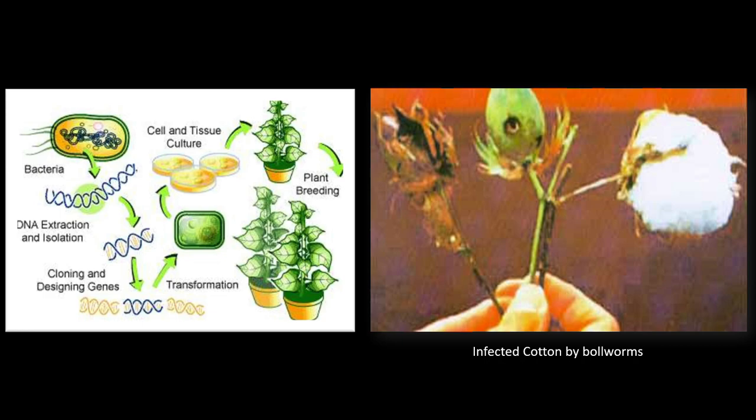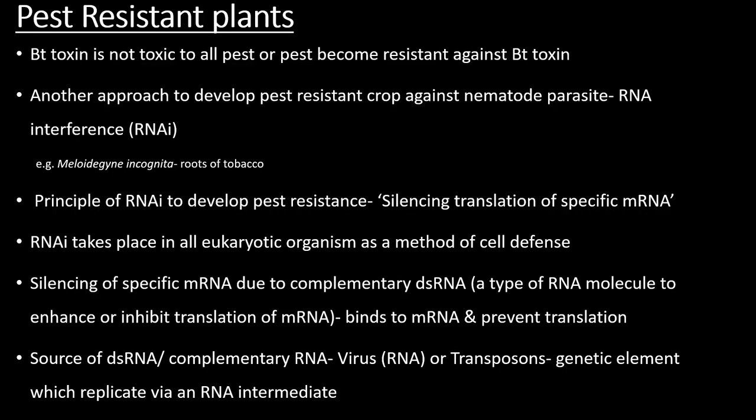The next point is regarding tobacco. BT toxin is not toxic to all pests, so another approach is to develop pest resistance against nematode parasites using RNA interference. The nematode Meloidogyne incognita damages the roots of tobacco, affecting tobacco yield. The principle of RNA interference is the silencing of translation of specific messenger RNA. RNA interference takes place in all eukaryotic organisms as a method of cell defense — silencing specific mRNA due to complementary double-stranded RNA.